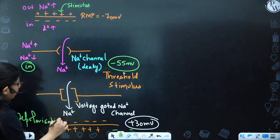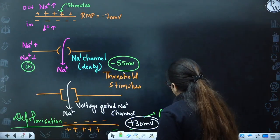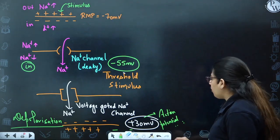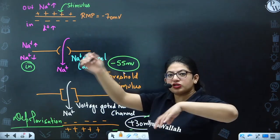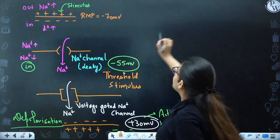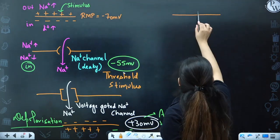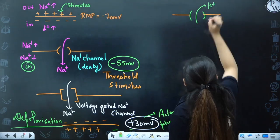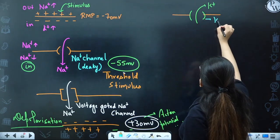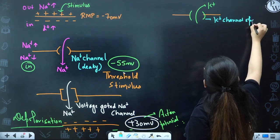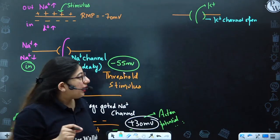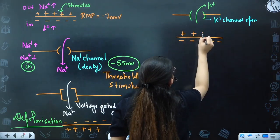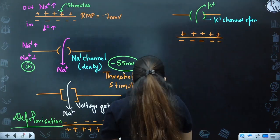This stage is known as Depolarization. We say that now the action potential is generated. Once plus 30 millivolt is achieved, the things will go in reverse. Now, potassium ion channels open. Potassium is higher inside, so it will move outside. At plus 30 millivolt, voltage-gated potassium ion channels open, and potassium moves outside. Inside becomes negative and outside becomes positive again. This stage is known as Repolarization.